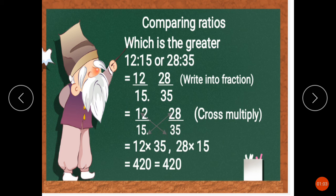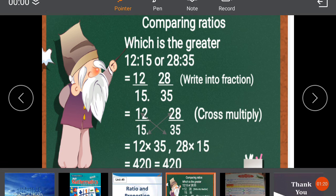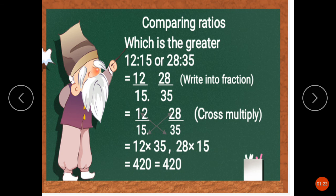We multiply 12 times 35 and 28 times 15. So 12 multiply 35 equals 420, and 28 multiply by 15 equals 420. So 420 equals 420, which means these ratios are equal.